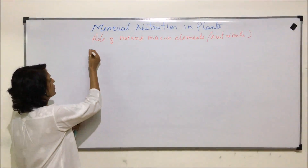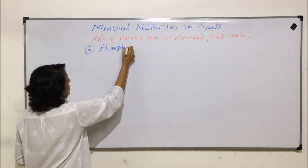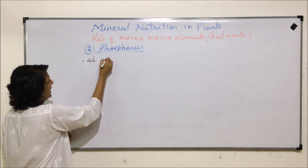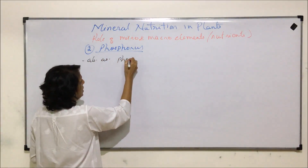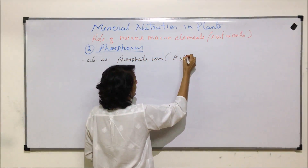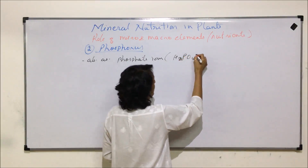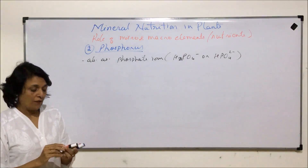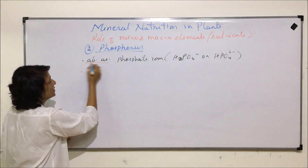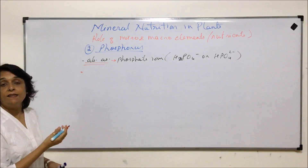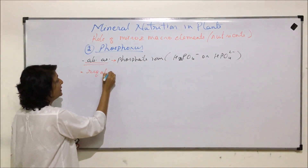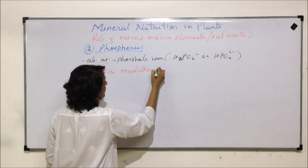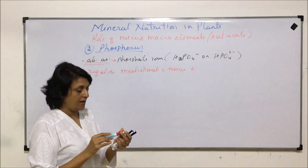The next element is phosphorus. Phosphorus is one of the essential macronutrients required by the plant. It is absorbed as phosphate ions from the soil by the root. Phosphorus is required at meristematic tissues, that is fast dividing cells, as well as metabolically active tissues.